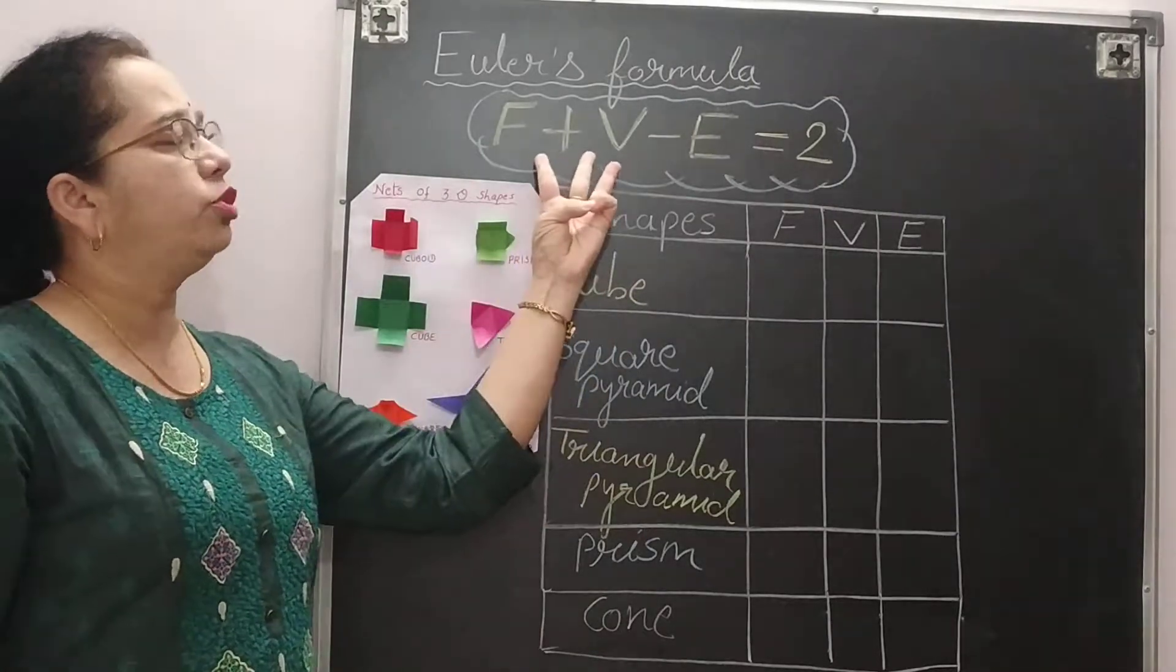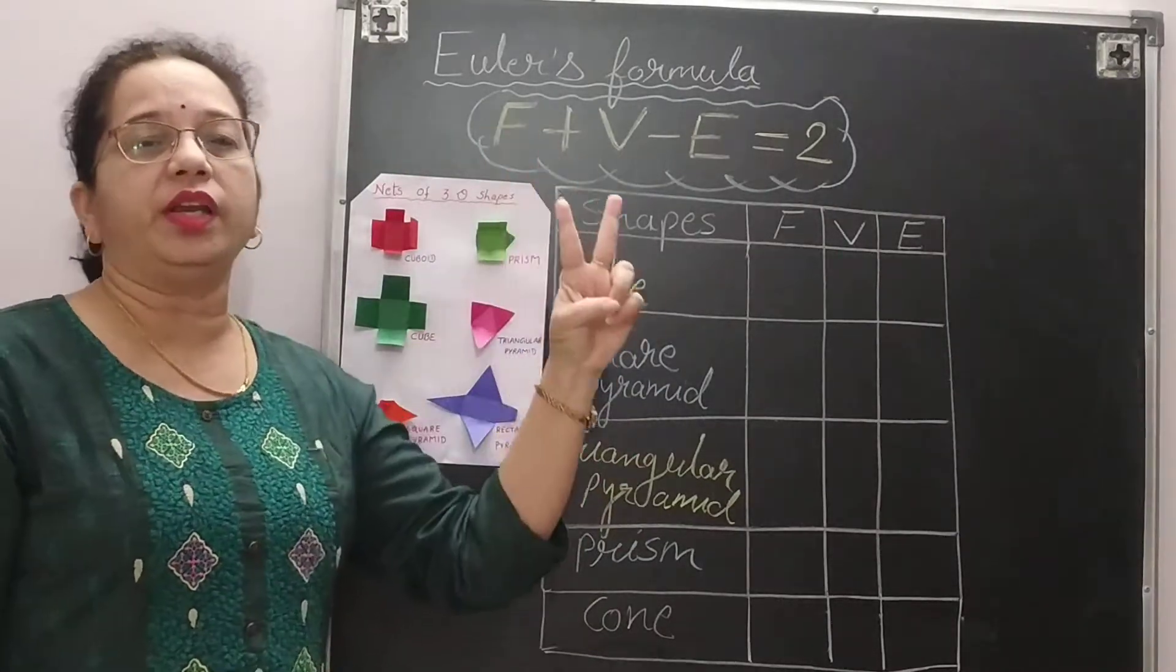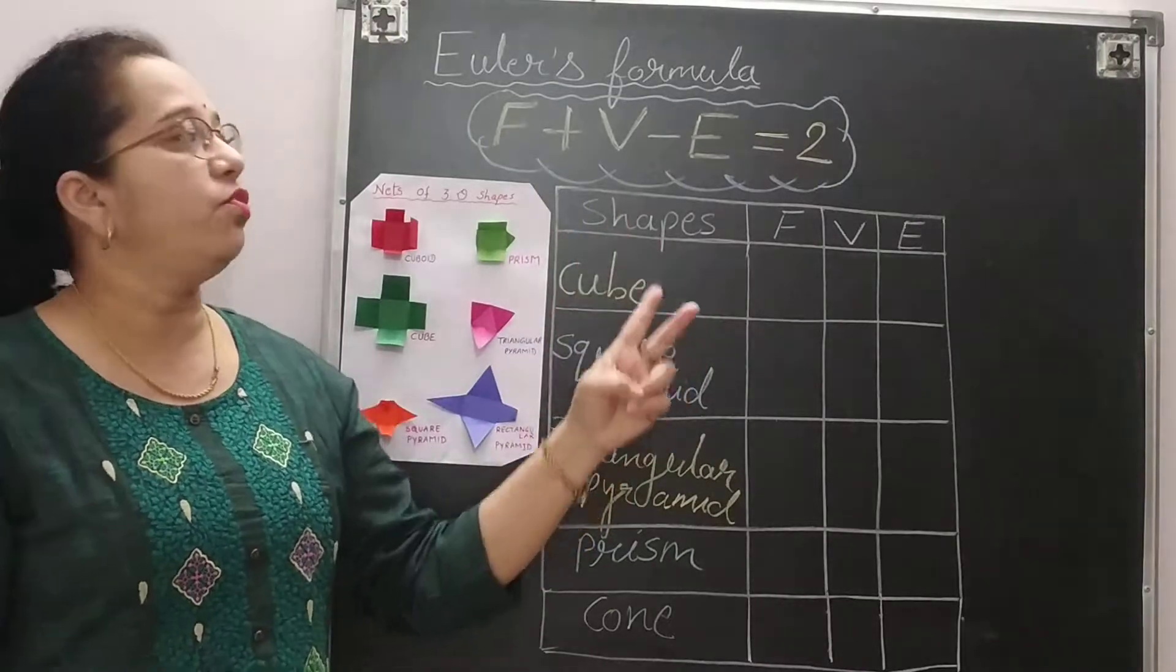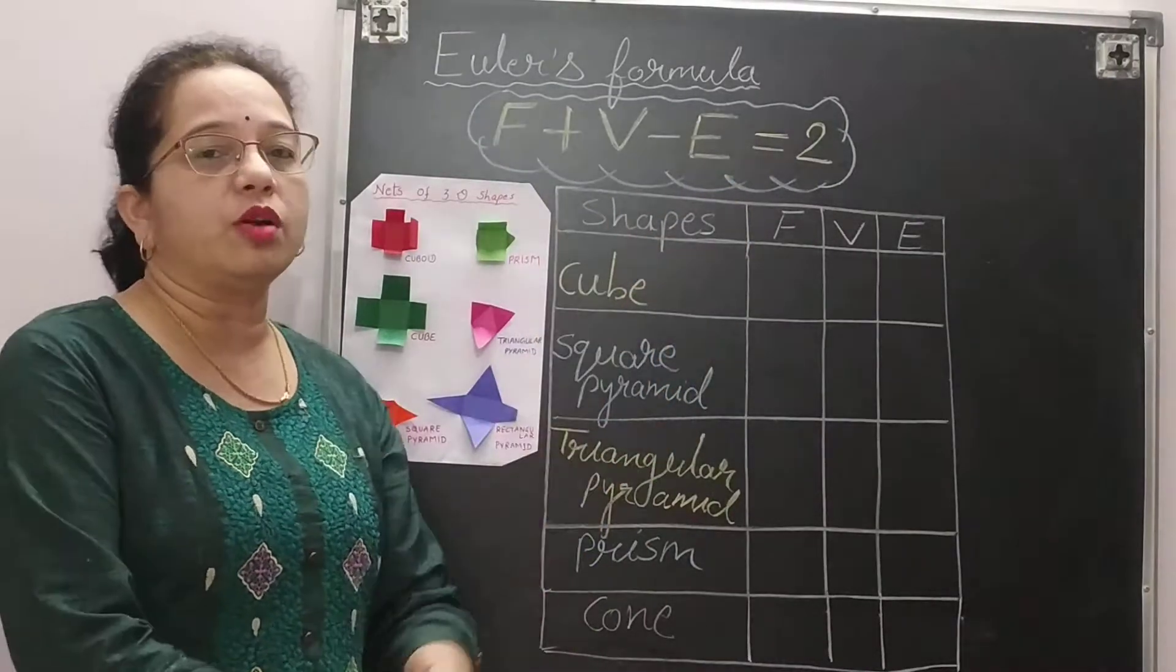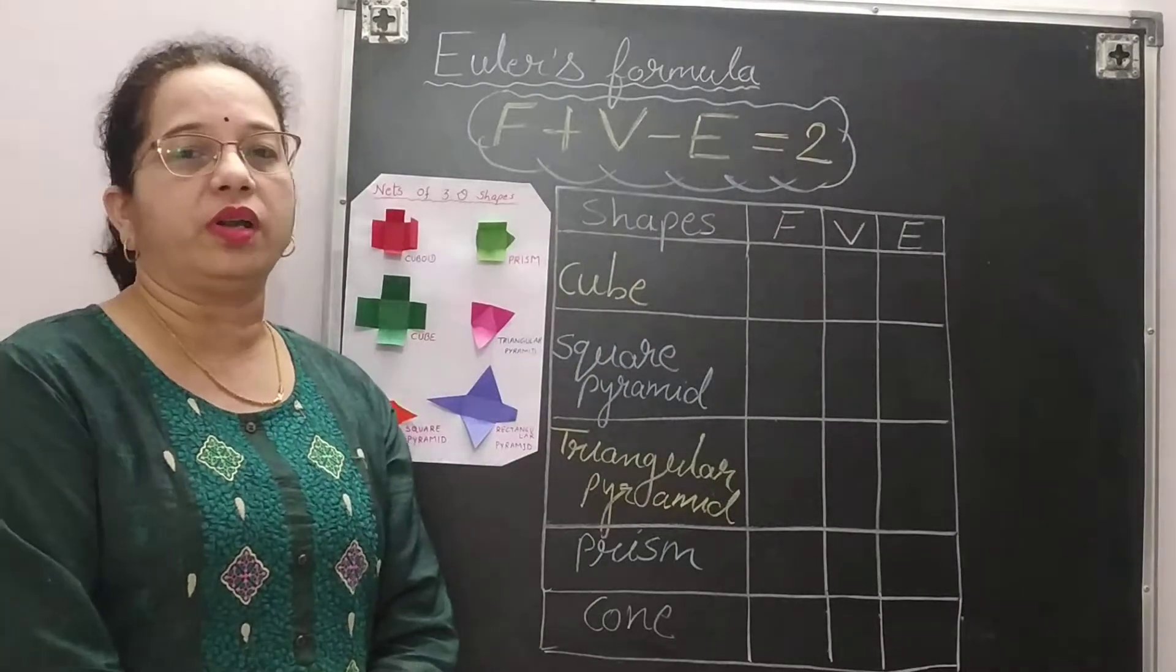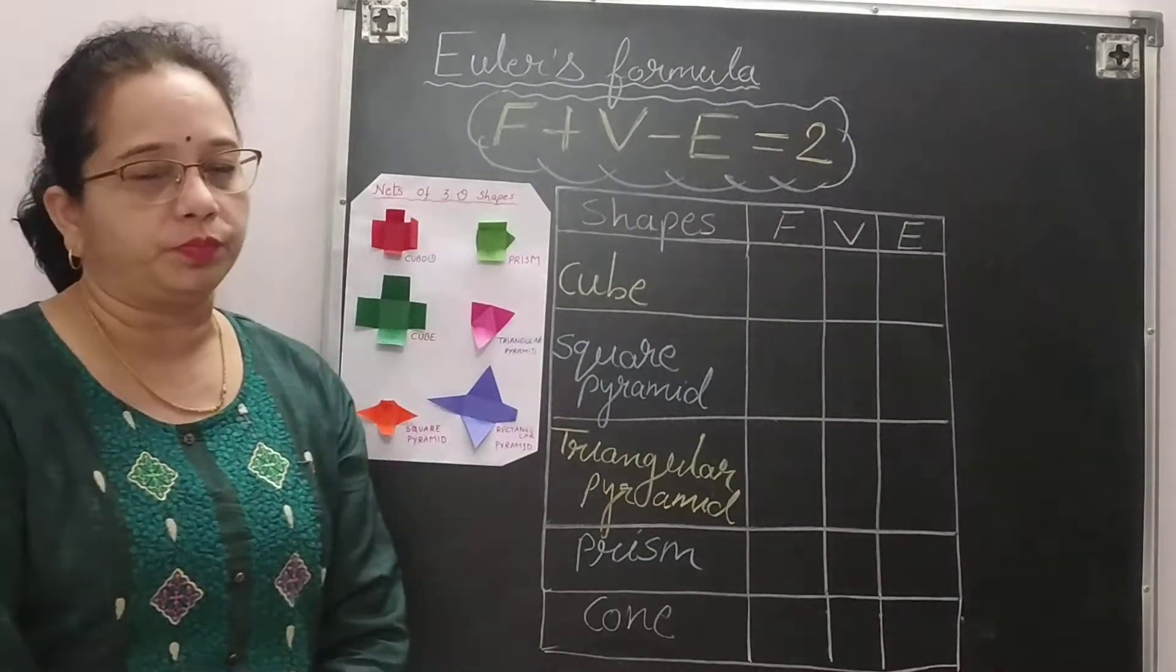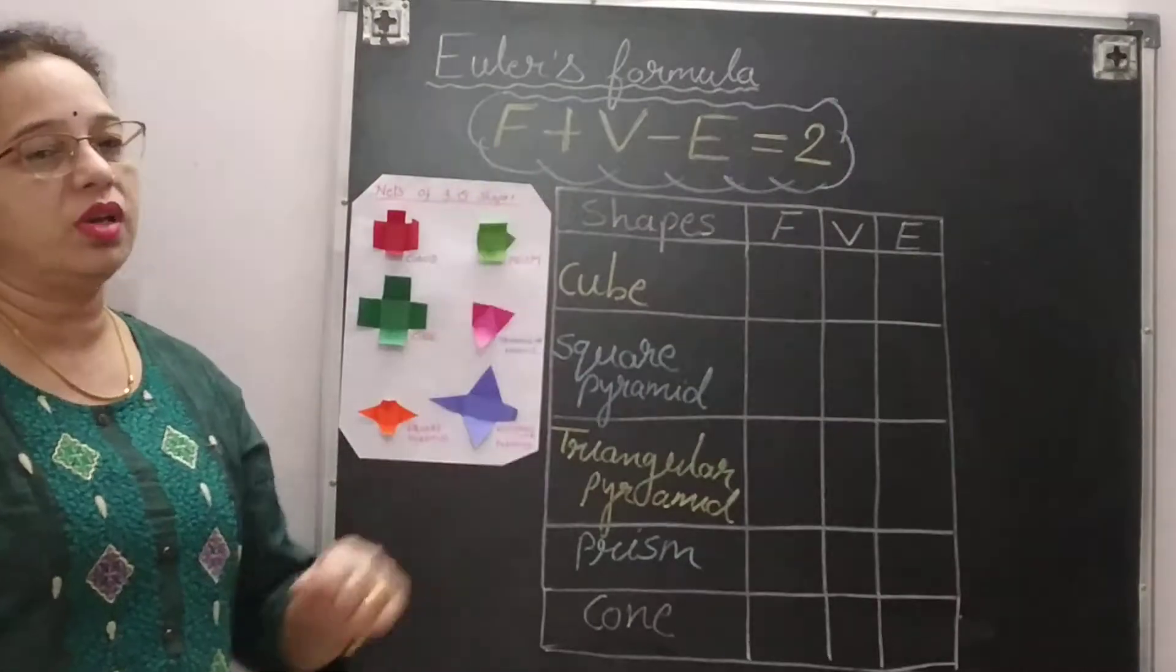Here we have 3 unknown quantities. Out of 3, if any 2 is given, the third one we can find out using Euler's formula. So again this formula is also very important for competitive exams. So let us start with Euler's formula.